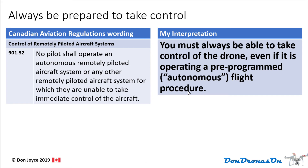Regulation 901.32: always be prepared to take control. You must always be able to take control of the drone even if it is operating a pre-programmed, or autonomous, flight procedure. For example, if you invoke a point-of-interest circle around a building, you can't just watch — you must remain on the controls and be ready to intervene if something goes wrong.